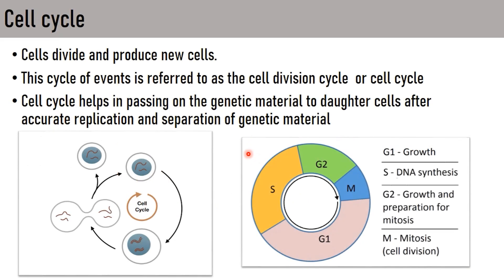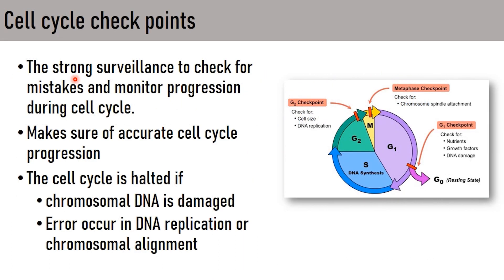The cell cycle is a series of events that takes place so that the cell divides and produces new cells. This series of events is what we refer to as the cell division cycle or cell cycle. Most of the time during the cell cycle the cells remain in interphase, and it is only during mitosis where the actual cell division happens. The cell cycle helps in passing of genetic materials to the daughter cell.